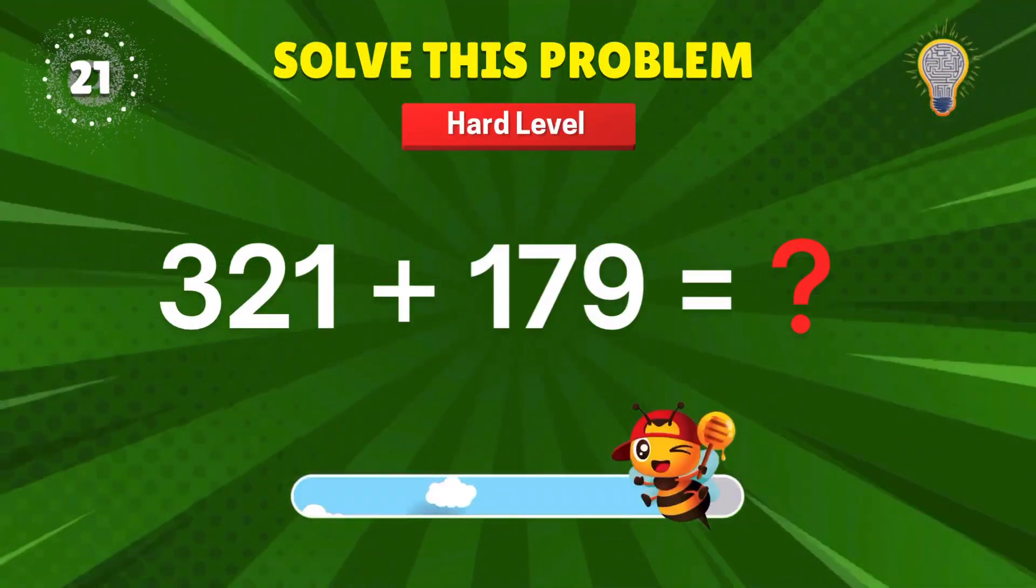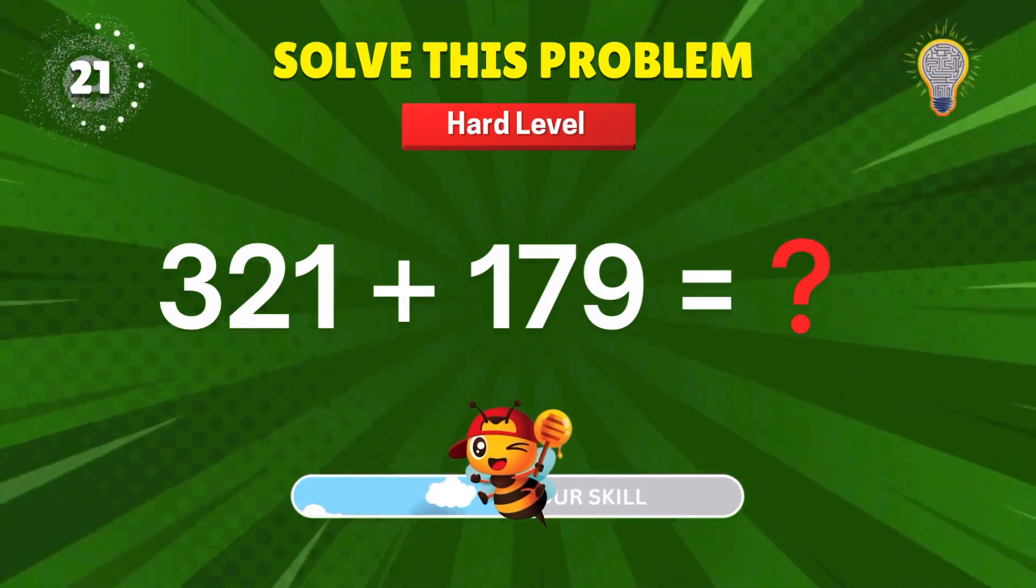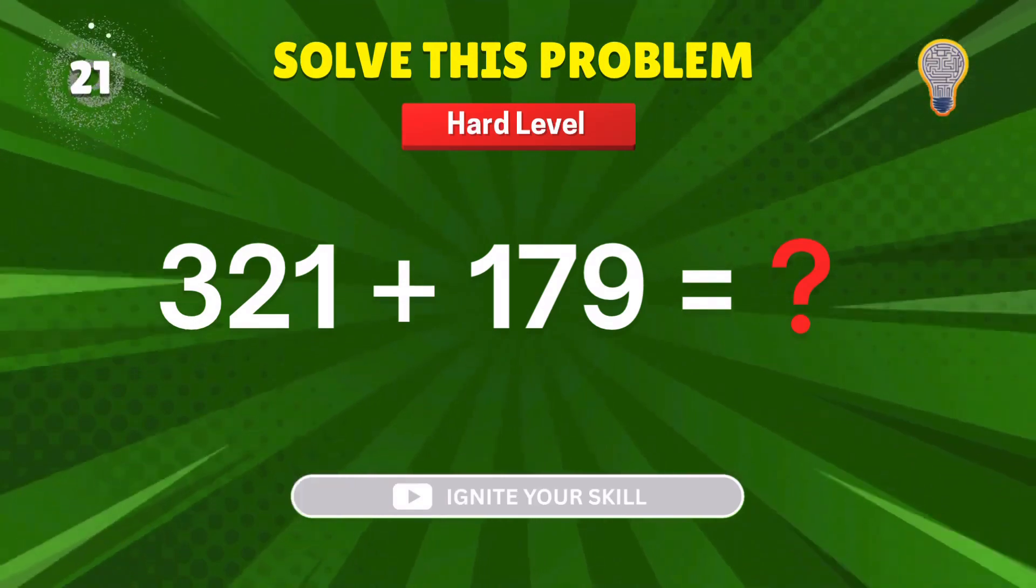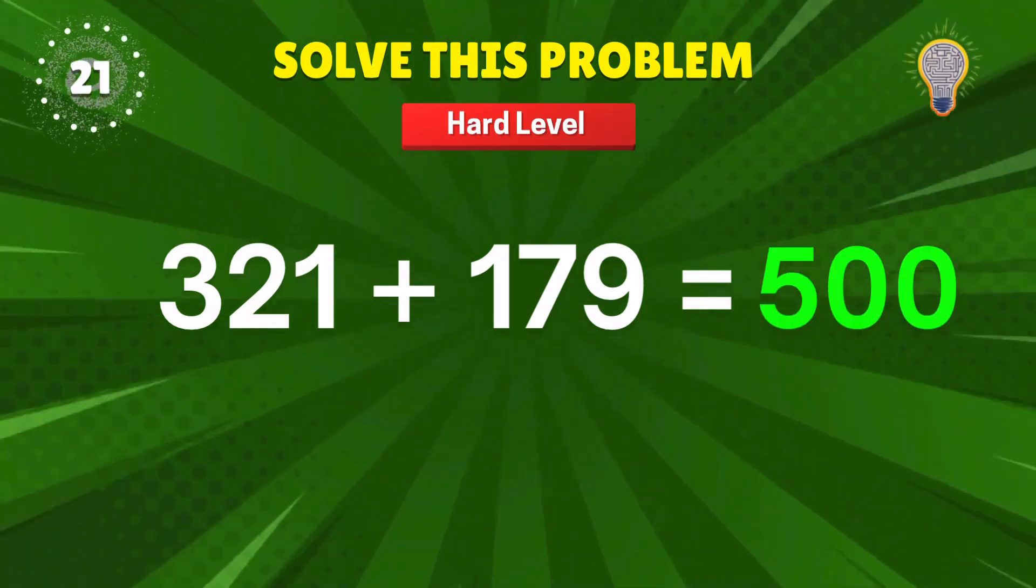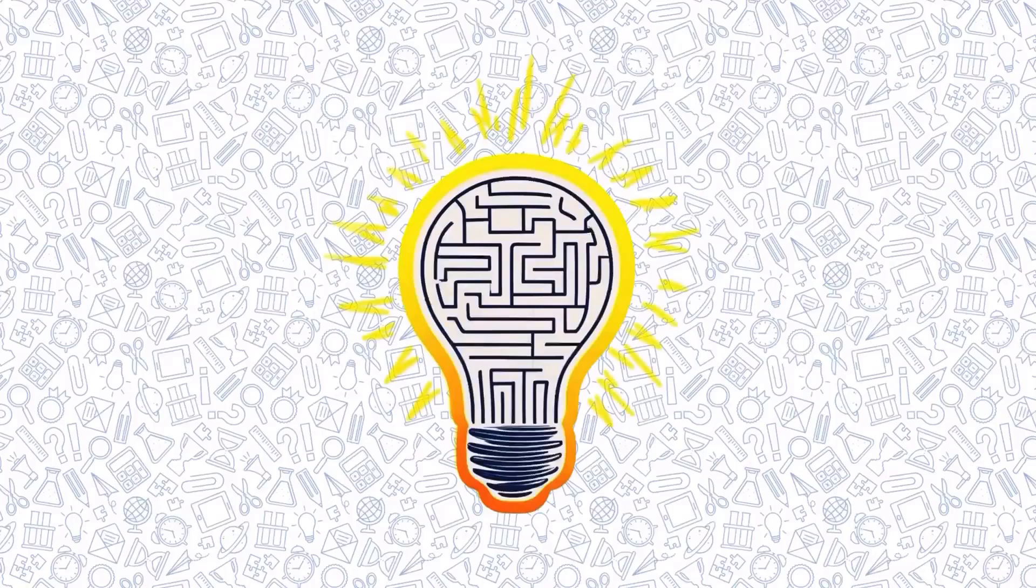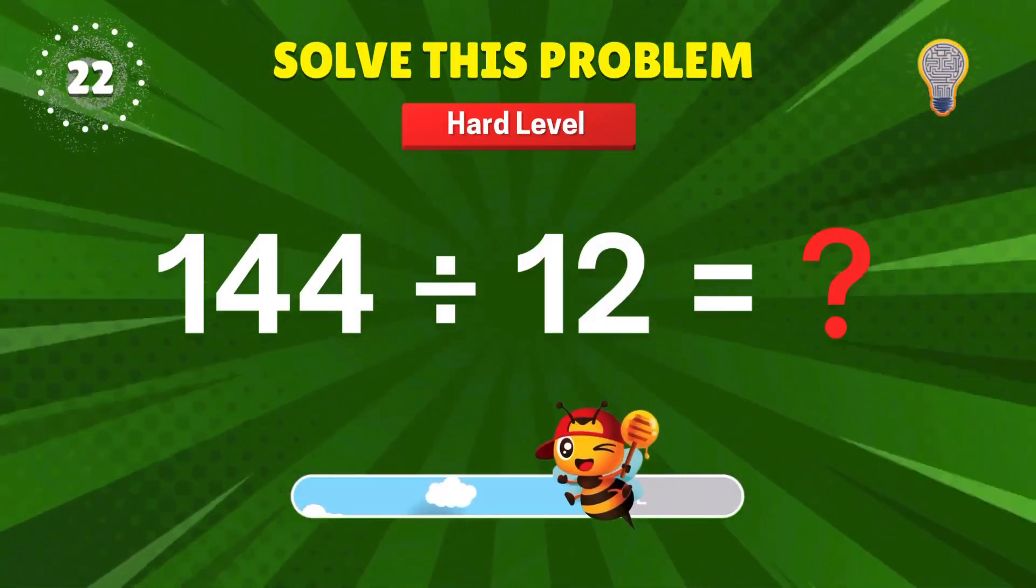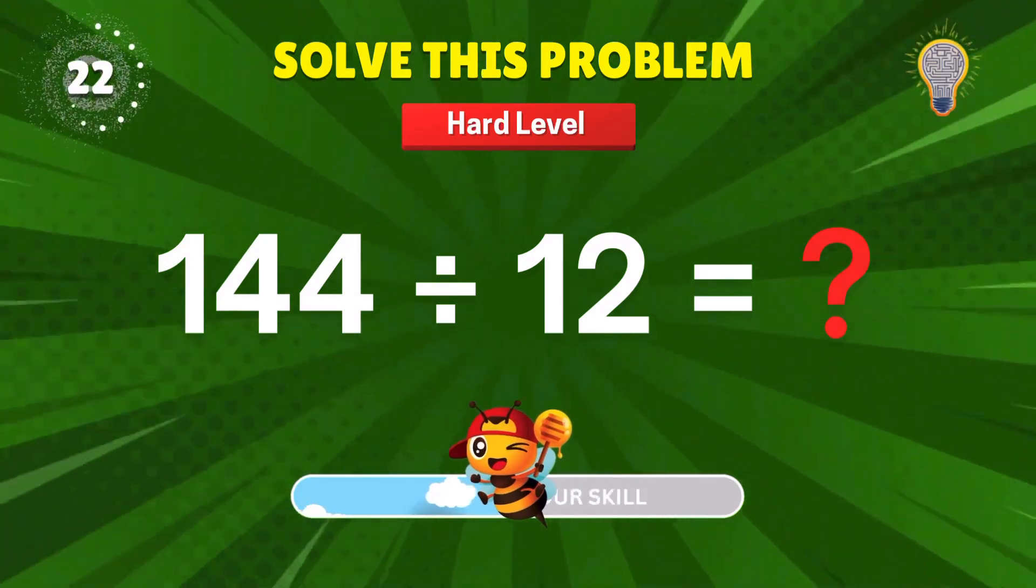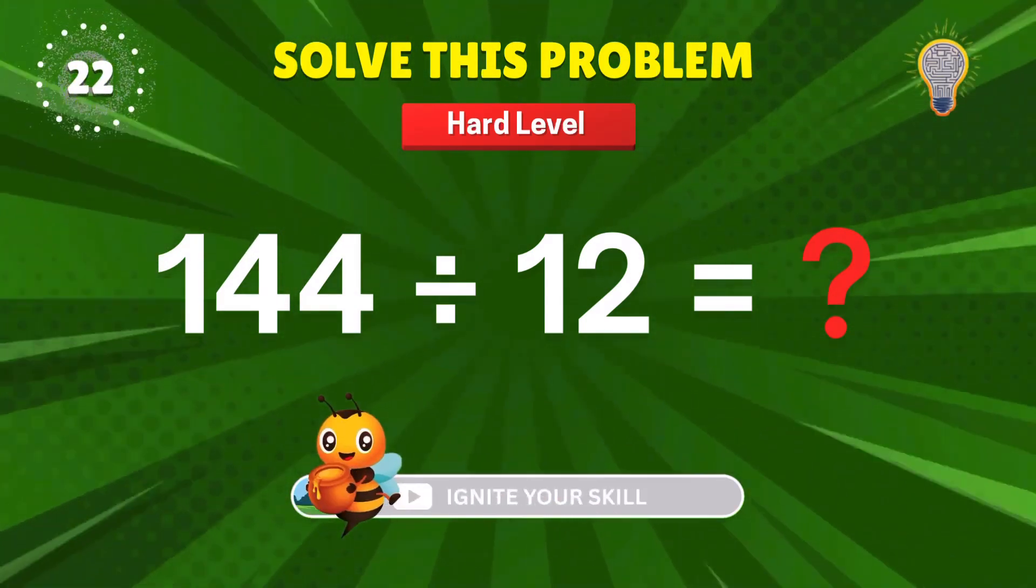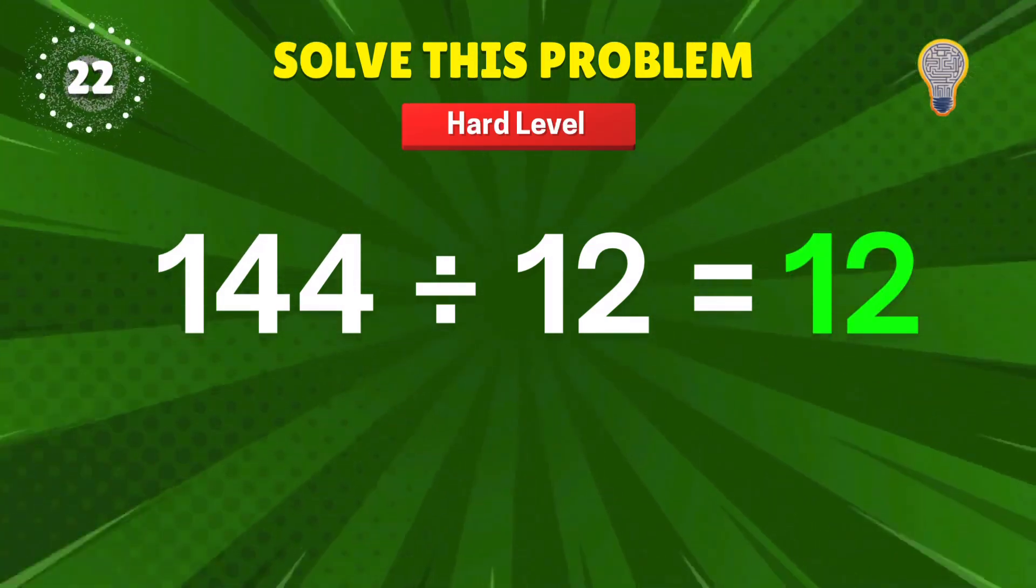321 plus 179. Now we're lifting heavy numbers. 500. Boom. That's a clean 1 point. 144 divided by 12? This one's got school vibes. 12. Nostalgic and correct. Add 1 point to your score.